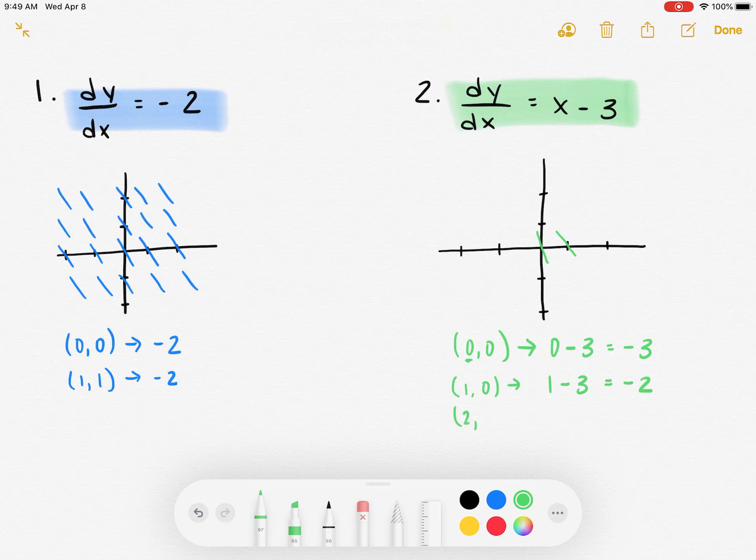If I keep moving over, if I go to (2,0), I end up getting 2 minus 3, which is negative 1, which gives me a slope that's even less steep. If I move over to (3,0), I get a slope of 3 minus 3, which is 0. It's totally a flat line.